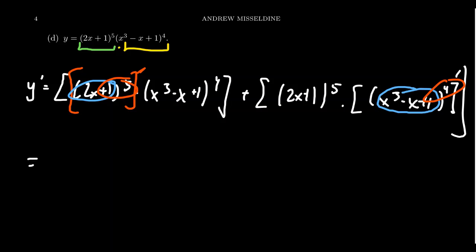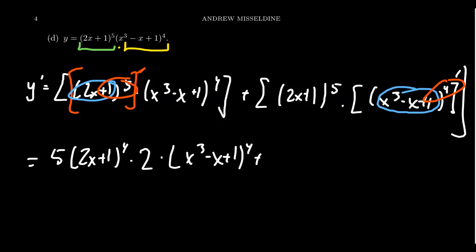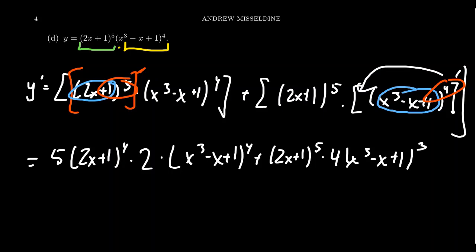Now the chain rule comes into play for each factor. Taking the derivative of (2x plus 1)^5: we get 5 times (2x plus 1)^4, lowering the power by 1, then multiply by the derivative of the inner function (2x plus 1), which is 2. That whole thing is multiplied by (x³ - x + 1)^4. For the second term, we keep (2x plus 1)^5, then take the derivative of (x³ - x + 1)^4: we get 4 times (x³ - x + 1)^3, lowering the power by 1, times the inner derivative of x³ - x + 1, which is 3x² minus 1. This gives us the correct derivative.